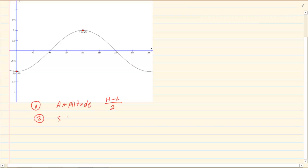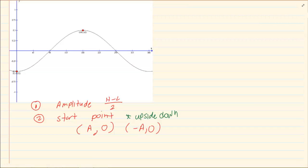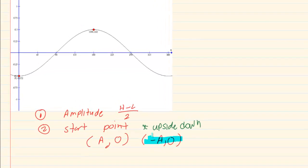Next, the starting point. Now the starting point for a cos graph is very interesting. The starting point of a cos graph is always the amplitude and zero. Now you must remember that if the graph is upside down, then we have a negative in front of the amplitude, and the starting point in that sense would also be negative.